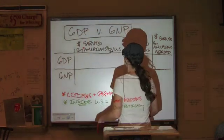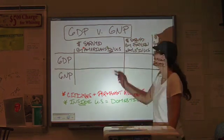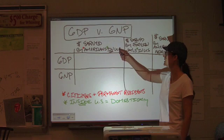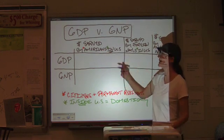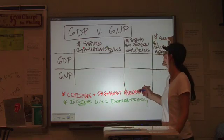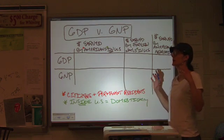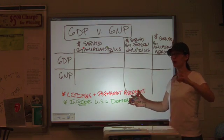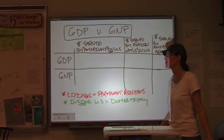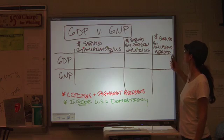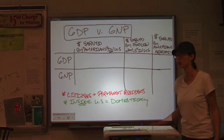What we've got here are the two different calculations, GDP and GNP. Across the top: money earned by Americans in the U.S. — so we're talking about citizens and permanent residents, domestically. Another category: money earned by foreign nationals in the U.S. — money that people earn who are here temporarily or who have no interest in pursuing American citizenship. And then the third category: money earned by Americans abroad — people who are American citizens but they're in other parts of the world.